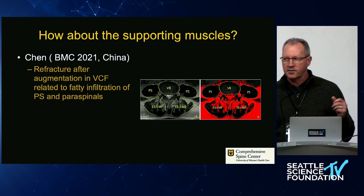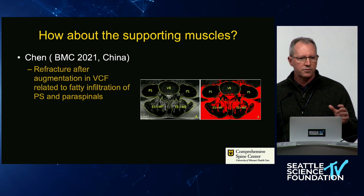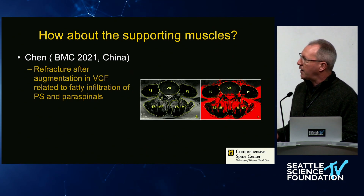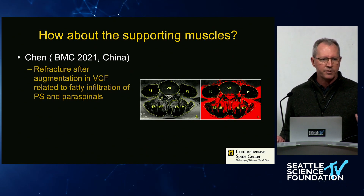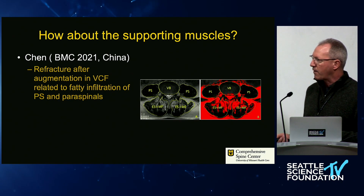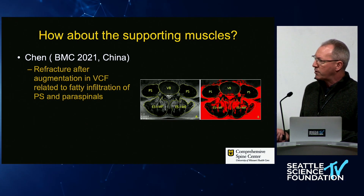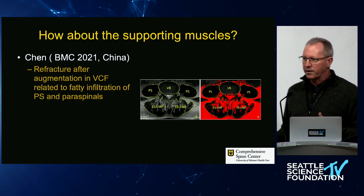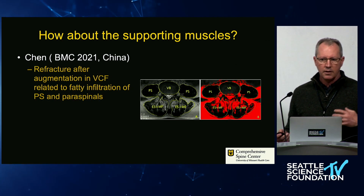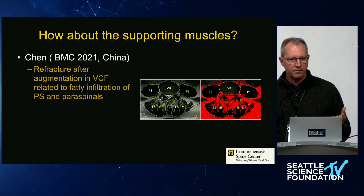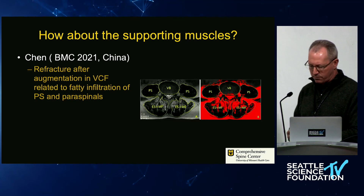Another interesting paper from China asked whether we're missing part of the picture by only focusing on the bony elements. They looked at the rate of refracture after cement augmentation of a compression fracture, and found that fatty infiltration of the psoas and paraspinal muscles on MRI clearly correlated with the risk of refracture. So yes, you can put cement into a vertebral compression fracture and give it some stability, but if the patient doesn't have adequate stabilizing musculature, that may itself be a risk factor for later failure.